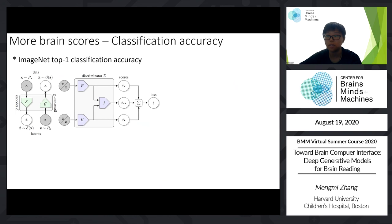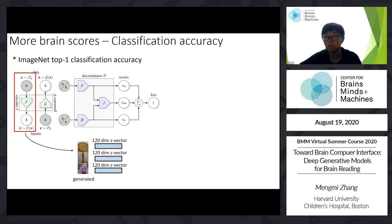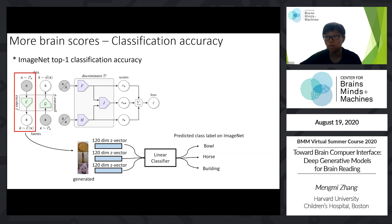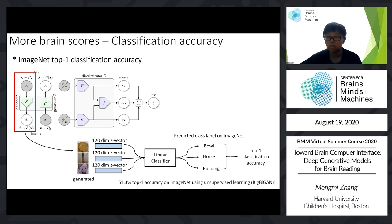Here is the third metric for evaluating brain readers, using the BigBiGAN encoder. For each generated image, the encoder outputs feature vectors. If this encoder representation reflects information about object categorization, then features from generated images should be good enough for classification on ImageNet. We train a simple classifier, predict class labels on ImageNet, and report top-1 accuracy. If the brain reader reconstructs meaningful natural-looking images, top-1 classification accuracy will be high. Surprisingly, the BigBiGAN paper reports 61% top-1 accuracy on ImageNet using purely unsupervised learning.